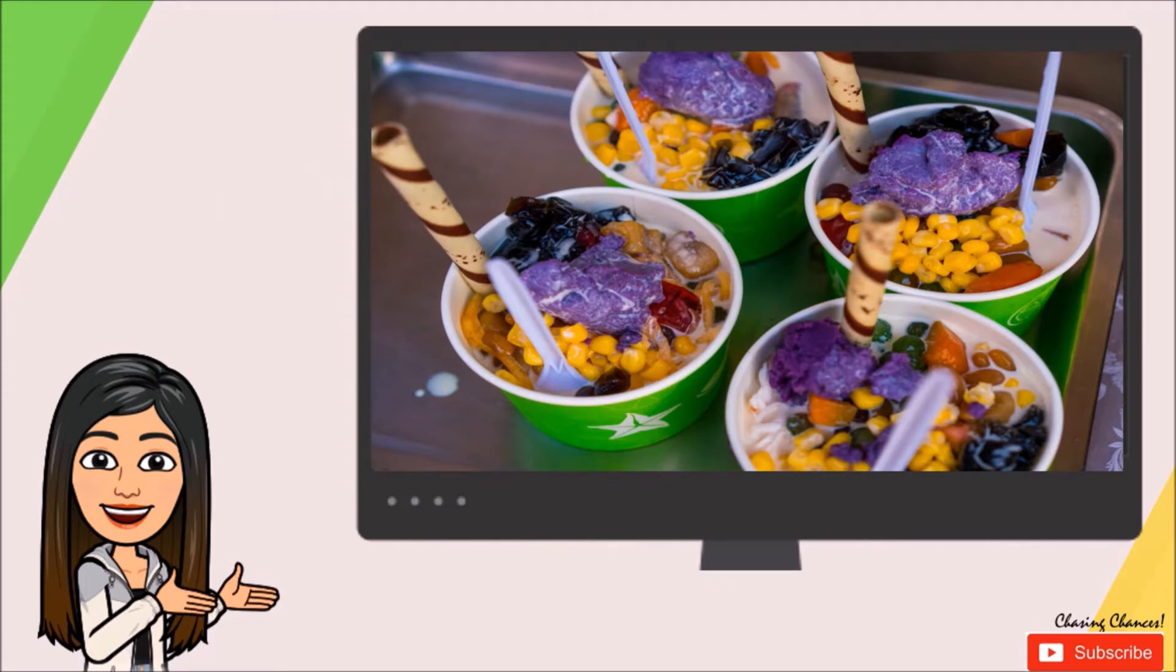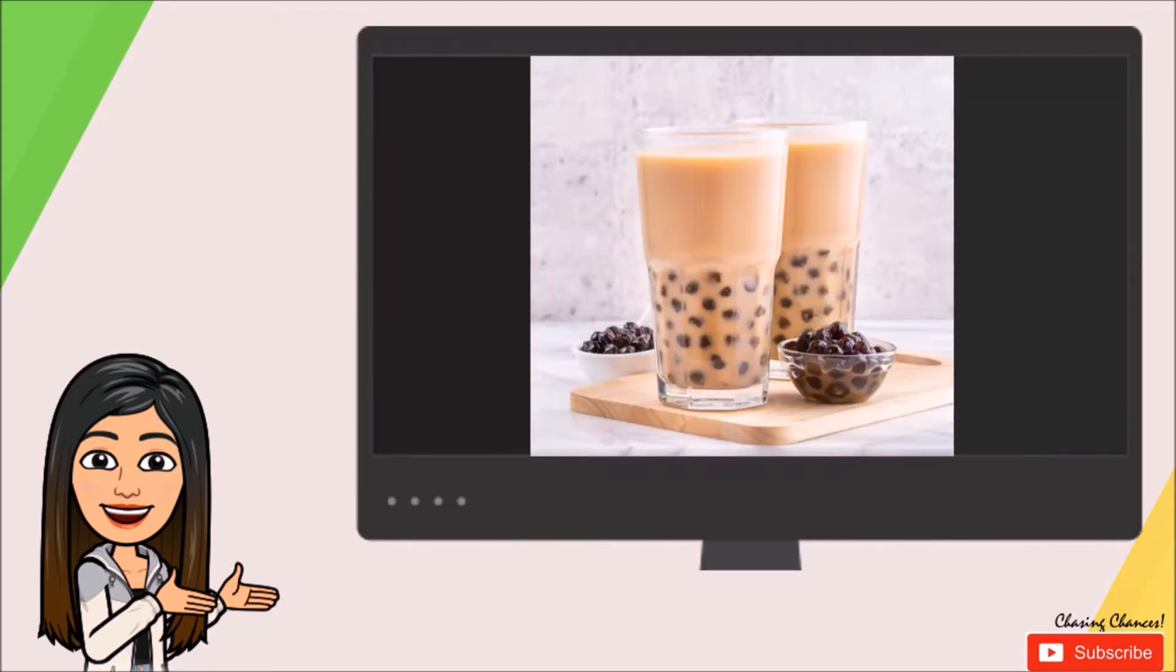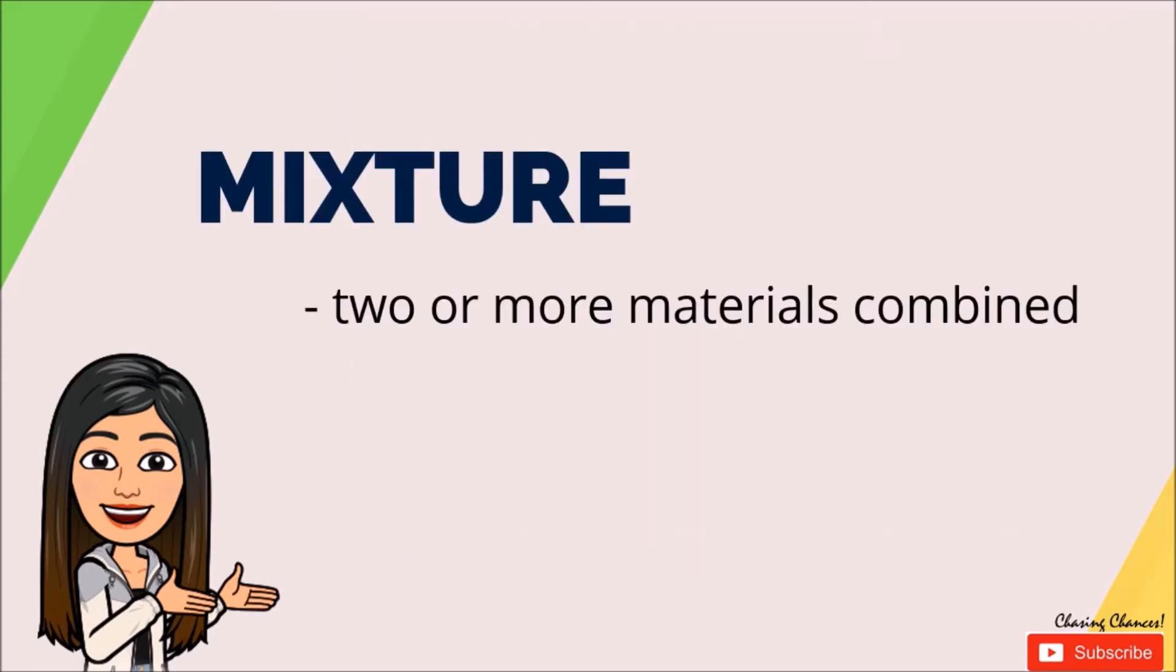Very good. To make a halo-halo they usually combine crushed ice, milk and various ingredients such as coconut agar jellies, boiled bananas, corn, sweet potato, jackfruit, leche flan and ice cream. Milk tea is also an example of a mixture as it contains tea, milk, sugar and even tapioca pearls.